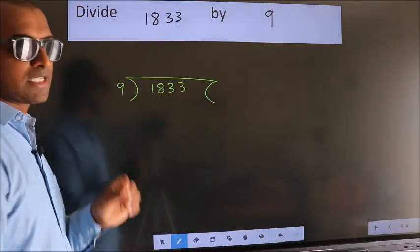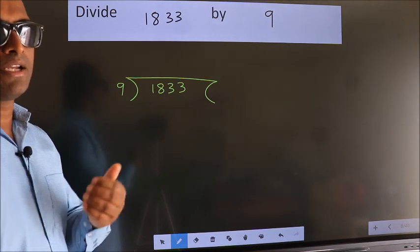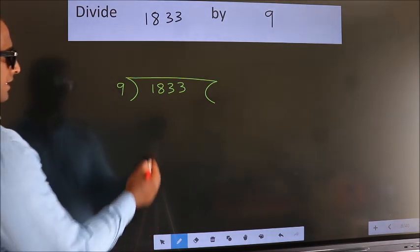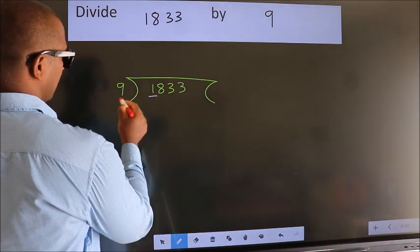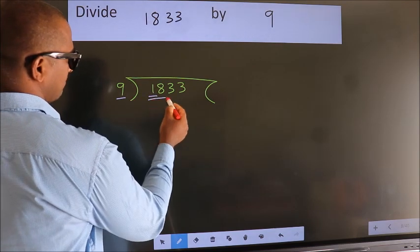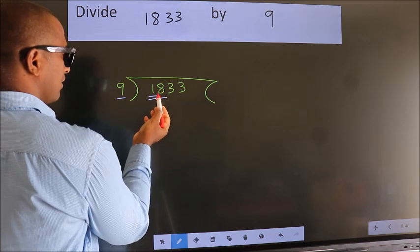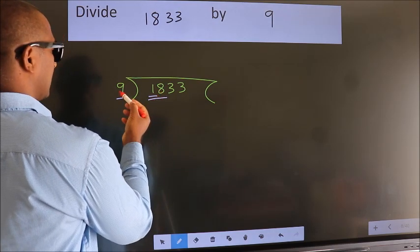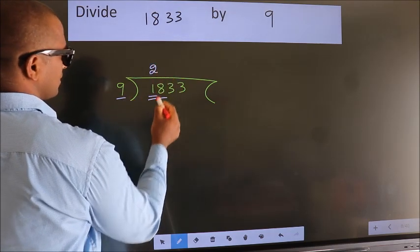This is your step 1. Next, here we have 1, here 9. 1 is smaller than 9, so we should take 2 numbers: 18. When do we get 18? In the 9 table. 9 times 2 is 18.